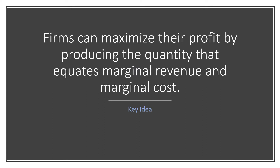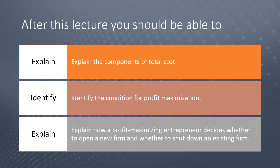Our key idea in this lesson is that firms can maximize their profit by producing the quantity that equates marginal revenue and marginal cost. Our three learning objectives are: explain the components of total cost, identify the condition for profit maximization, and explain how a profit-maximizing entrepreneur decides whether to open a new firm or shut down an existing firm.